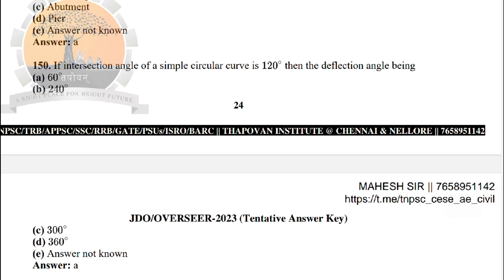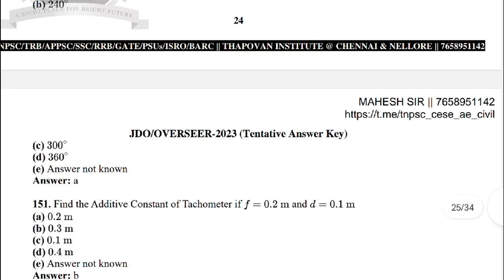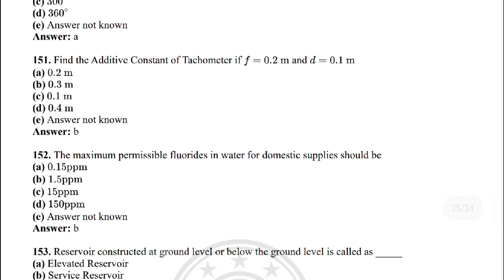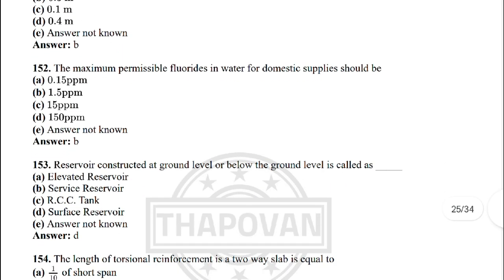Next: if the intersection angle of a simple circular curve is 120°, the deflection angle is — the correct answer is option A: 60°. Next: find the additive constant of a tacheometer where f = 0.2 and d = 0.1 m — the correct answer is option B: 0.3 m.